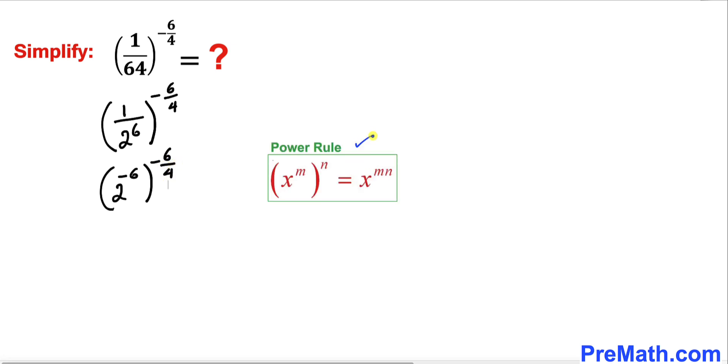Now let's recall this power rule of exponents. According to this rule, we can multiply out these two nested exponents. So therefore we can write this thing: 2 power negative 6 times negative 6 divided by 4.